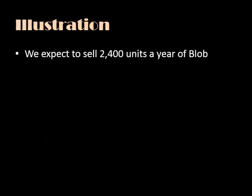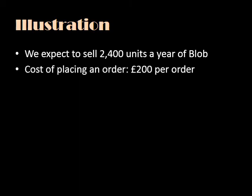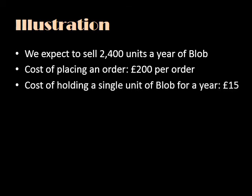Let's illustrate this with an example. Let's say we expect to sell 2,400 units a year of a product called Blob. We calculate the cost of placing and receiving an order, and that is £200 for each order. We also calculate the cost of holding a single unit of Blob for one year, and that works out at £15.